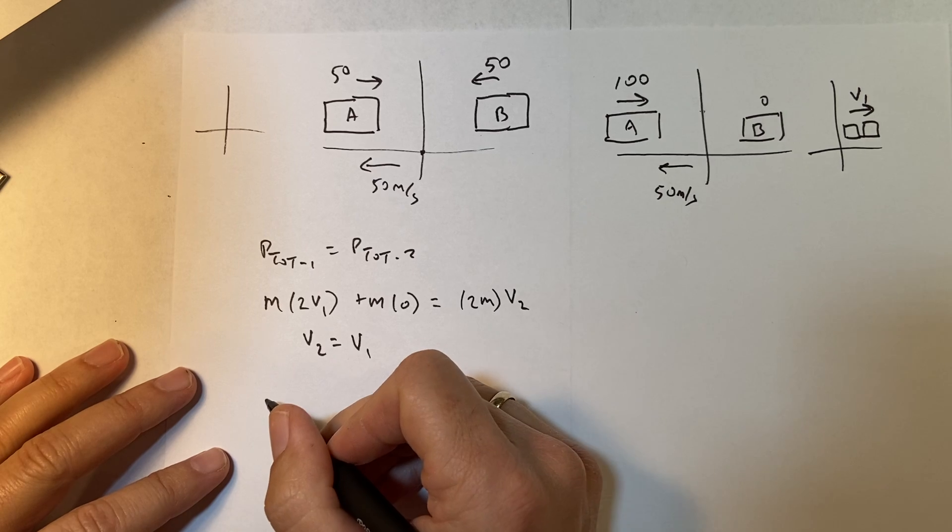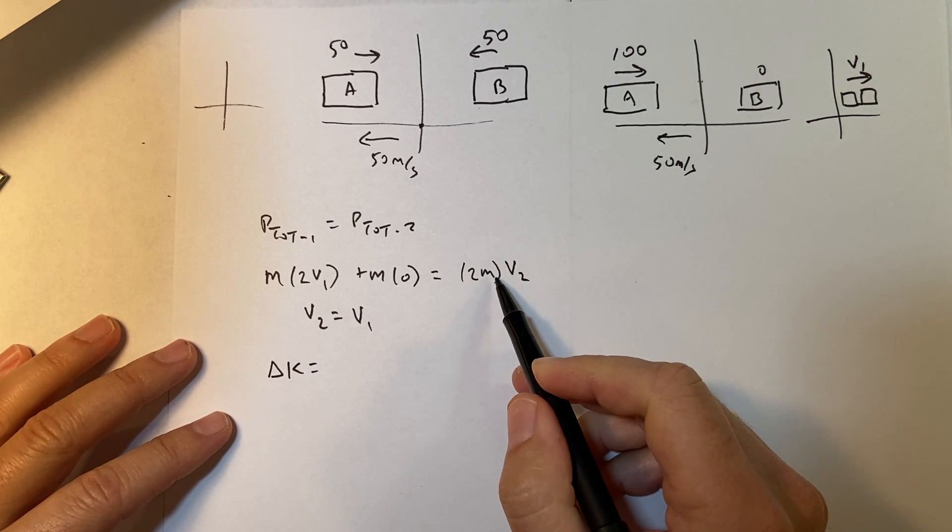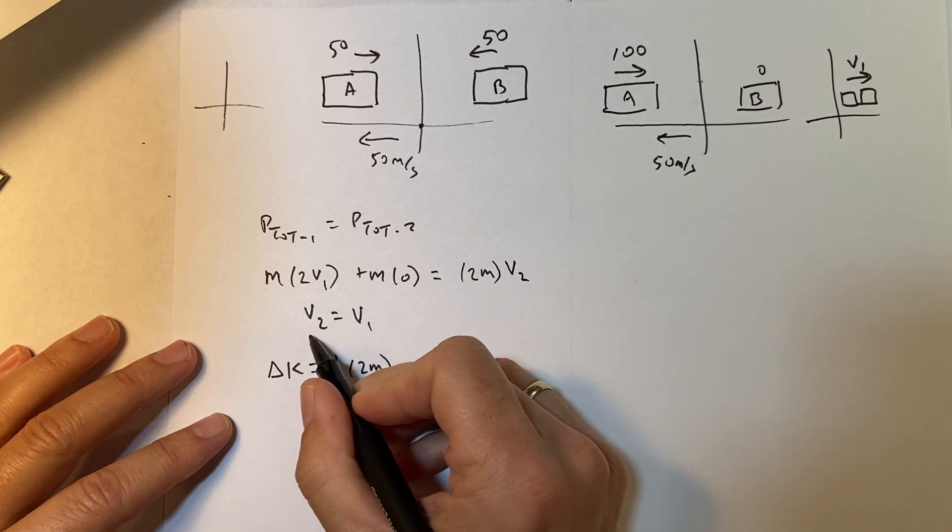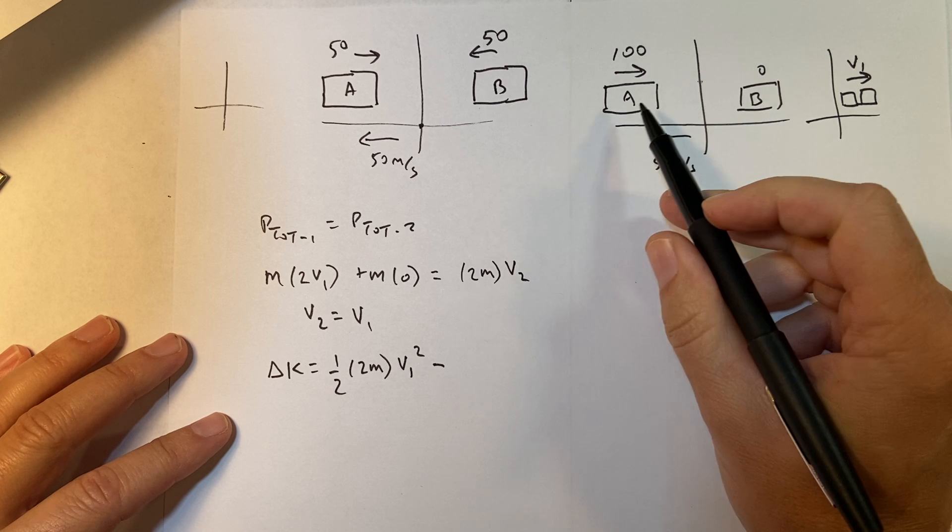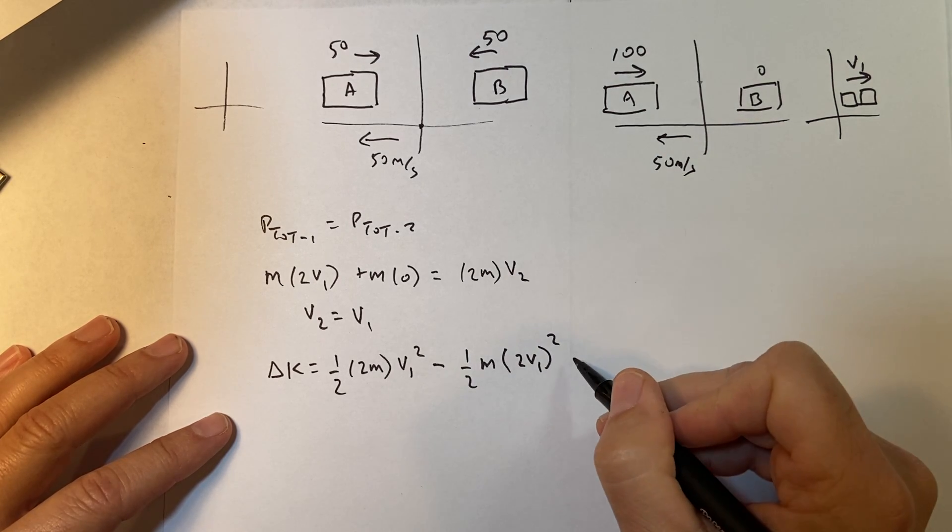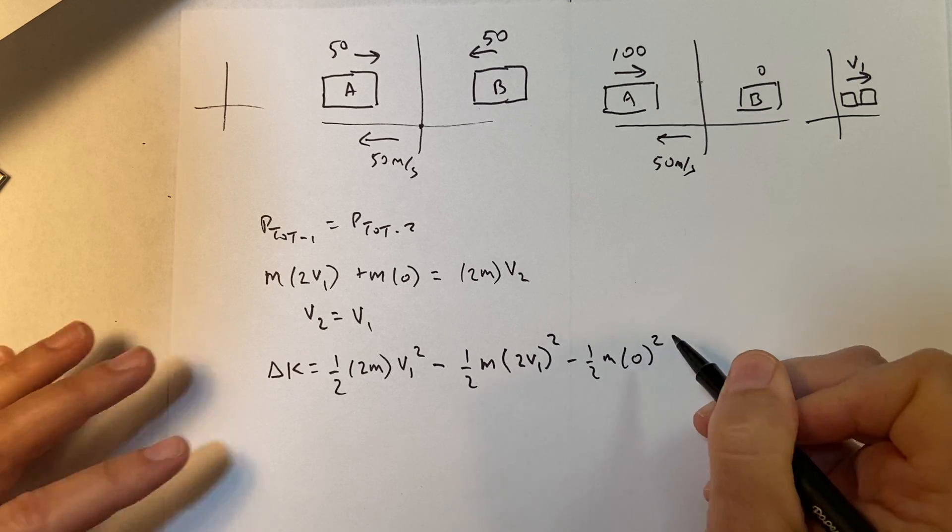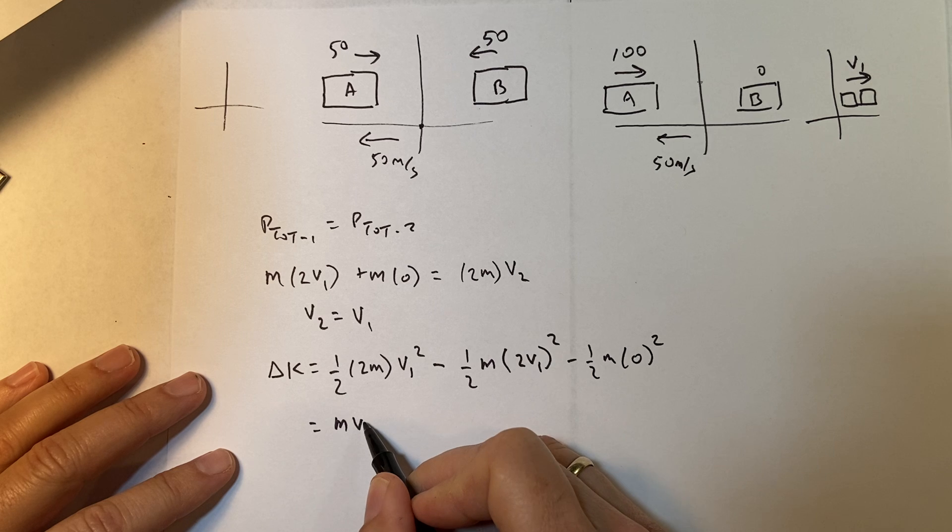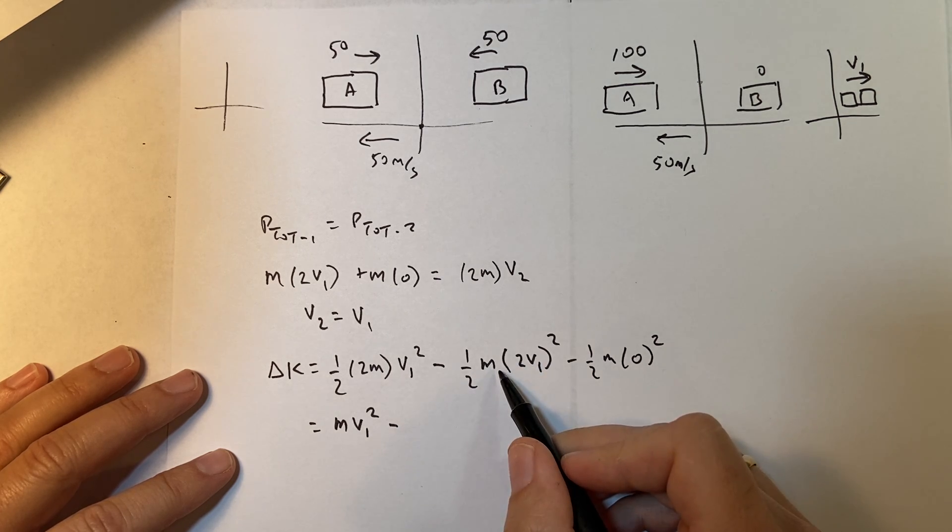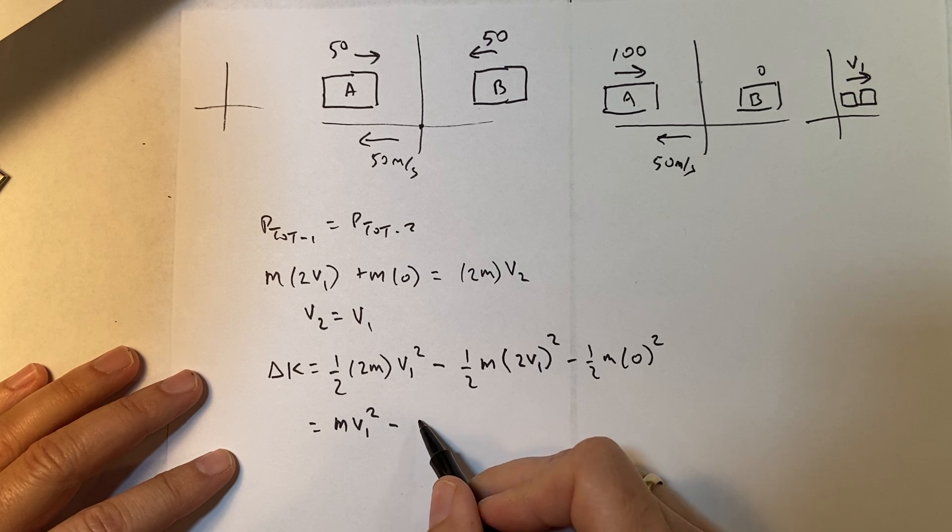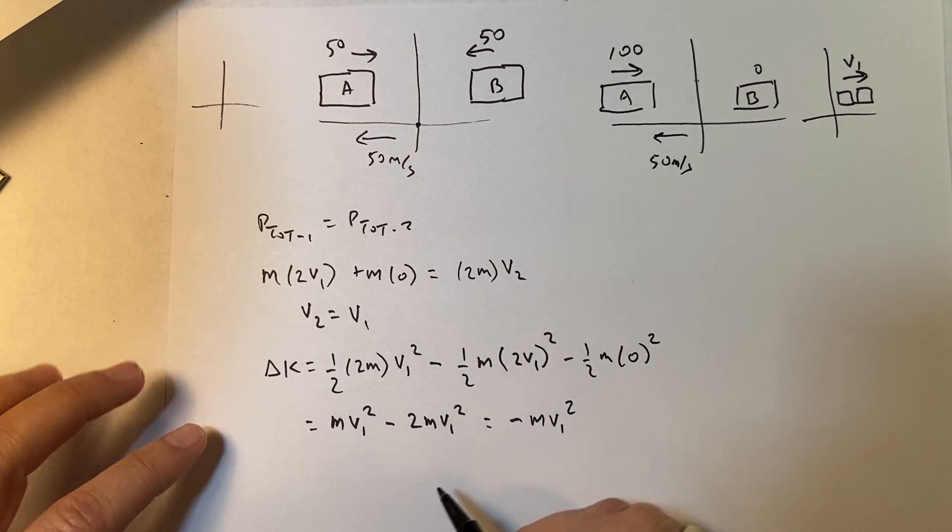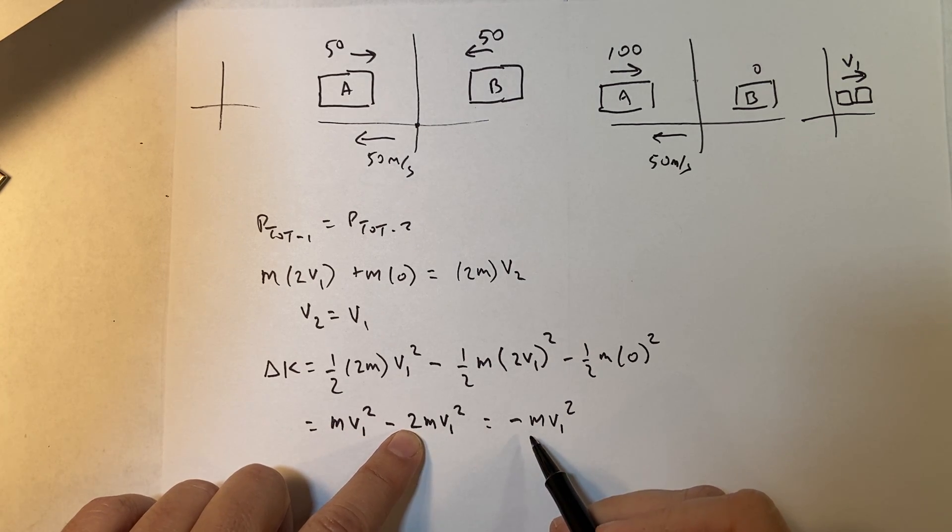So let's put delta K is going to be the final kinetic energy. So in the final case, I have 1 half, and I have the mass of 2M, and then the velocity is V1, so V1 squared, that's my final. Minus initial kinetic energy, I have this one, which is 1 half times M times 2V1 squared, and then that one doesn't have any kinetic energy. Minus 1 half M times 0 squared. So this is going to be MV1 squared. This is going to be minus, I have 4M, 1 half 4MV squared, so it's going to be minus 2MV1 squared. So it's going to be minus MV1 squared, because I have MV1 squared minus 2MV1 squared is that, and that's my delta K.